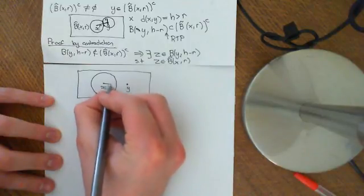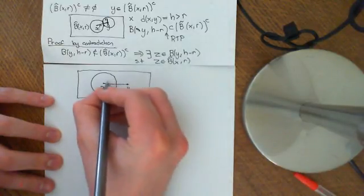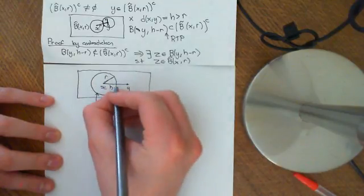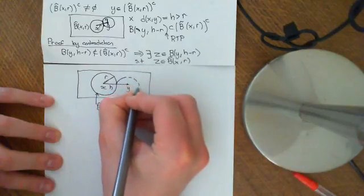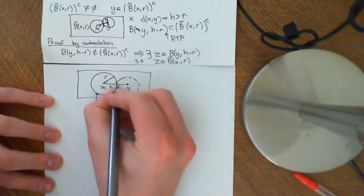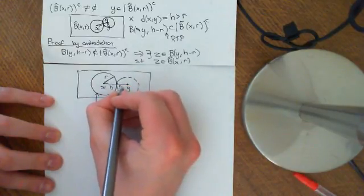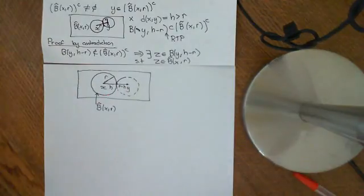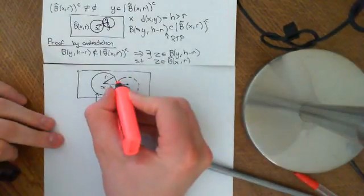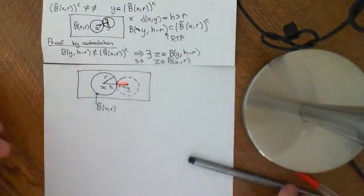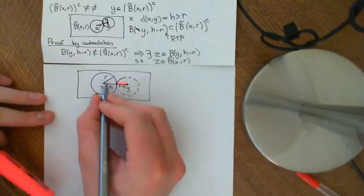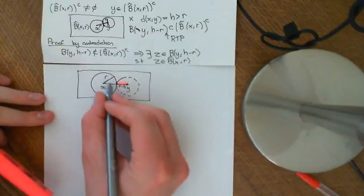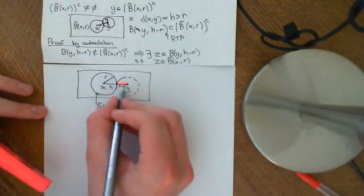The distance between X and Y is some H, and the radius of this closed ball is R. Now what I'm doing is taking an open ball — I should draw it dashed — around Y of radius H minus R, which is the length of this little bit here, because the overall length from X to Y is H, and the length from X to this boundary point is R, so we let this be H minus R.